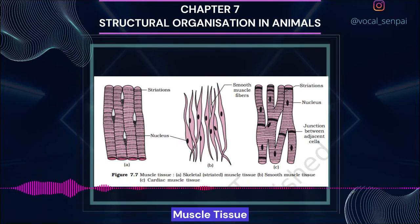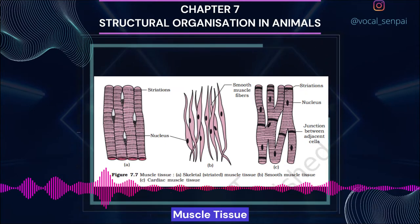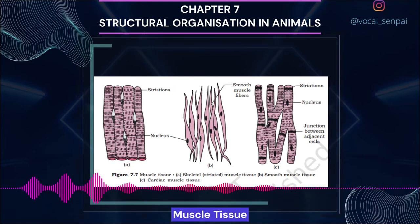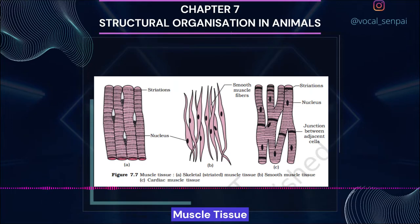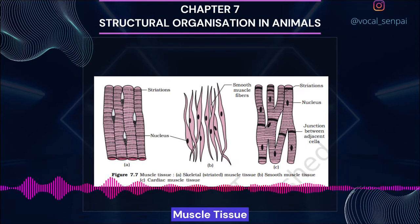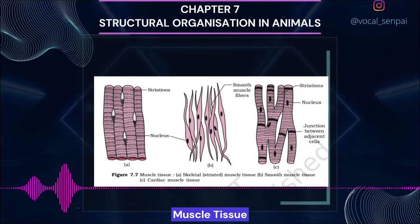Skeletal muscle tissue is closely attached to skeletal bones. In a typical muscle such as the biceps, striated skeletal muscle fibers are bundled together in a parallel fashion (figure 7.7a). A sheath of tough connective tissue encloses several bundles of muscle fibers. The smooth muscle fibers taper at both ends (fusiform) and do not show striations (figure 7.7b). Cell junctions hold them together and they are bundled in a connective tissue sheath. The wall of internal organs such as blood vessels, stomach and intestine contains smooth muscle tissue. Smooth muscles are involuntary — their functioning cannot be directly controlled; we cannot make them contract merely by thinking as we can with skeletal muscles.